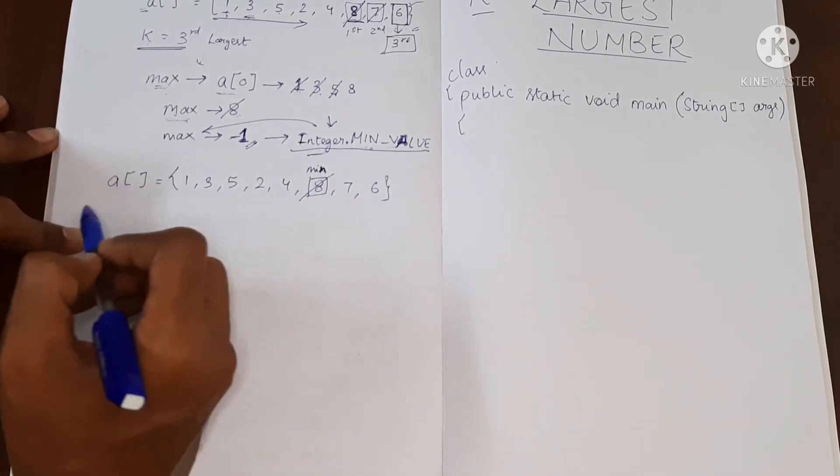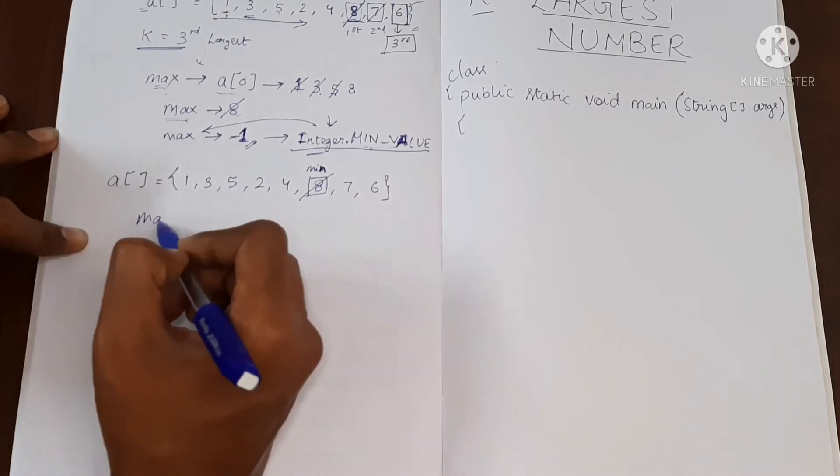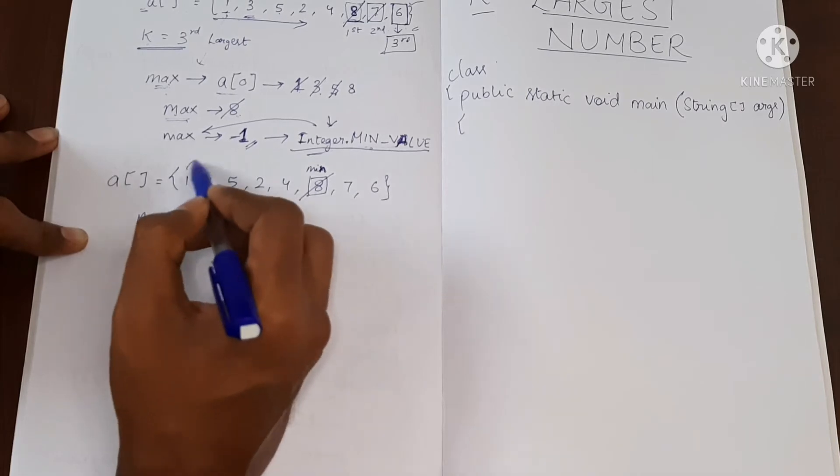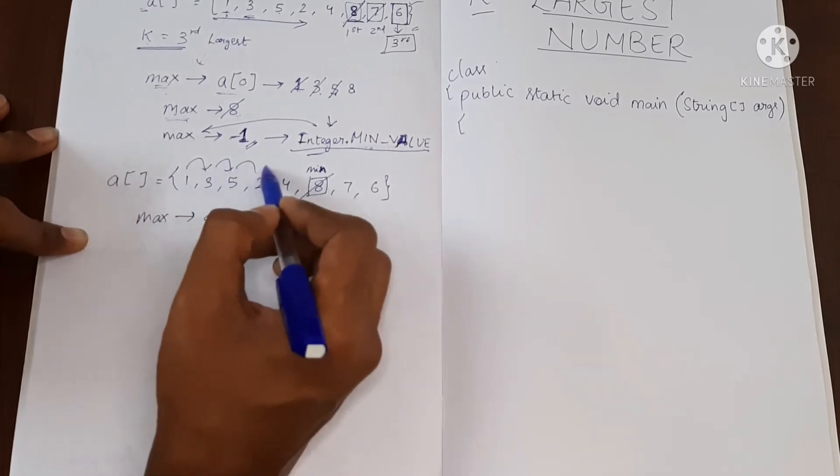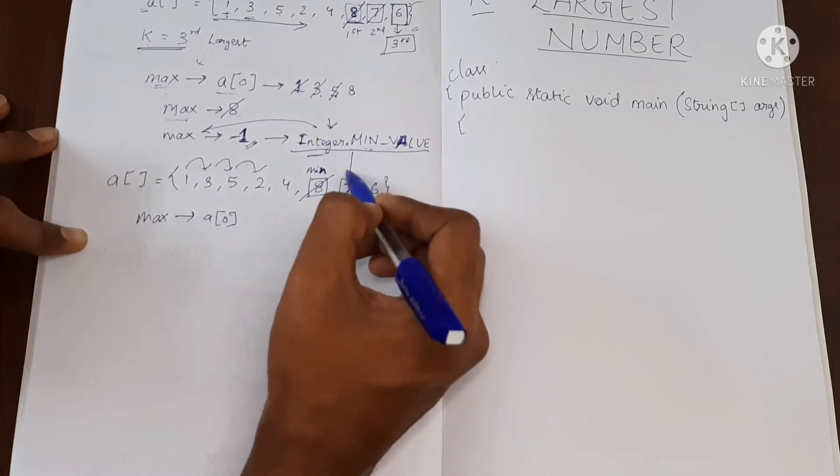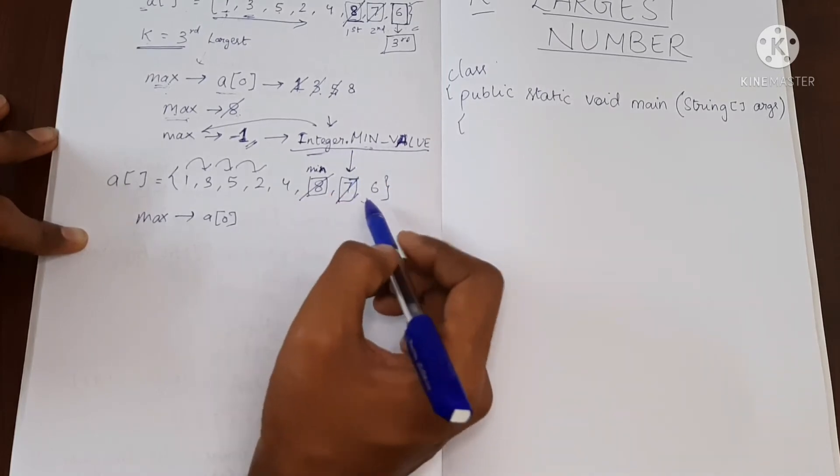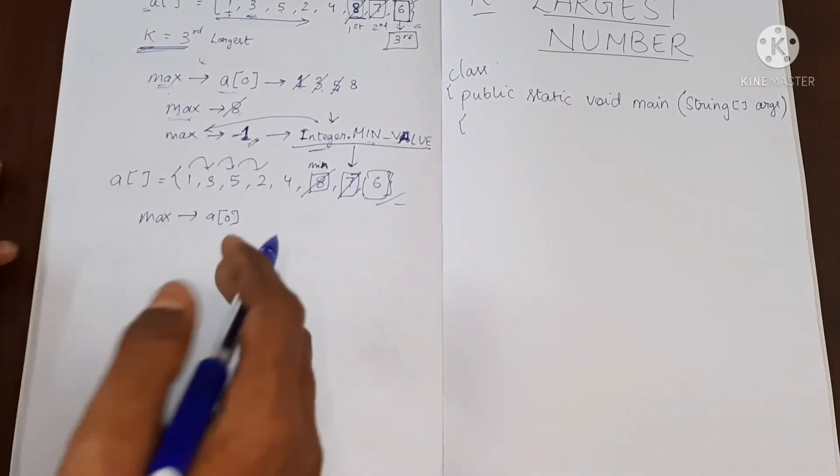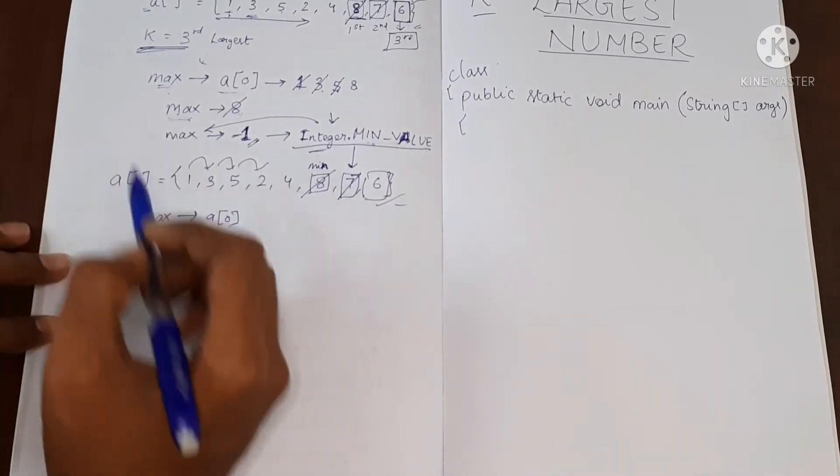Now again I have to do max as a of 0 and then again I have to repeat the same process. I'll find 7 as max then I'll change it into Integer.MIN_VALUE, and then third time or the kth time I'll be finding the kth largest value. So now we need two loops for this.